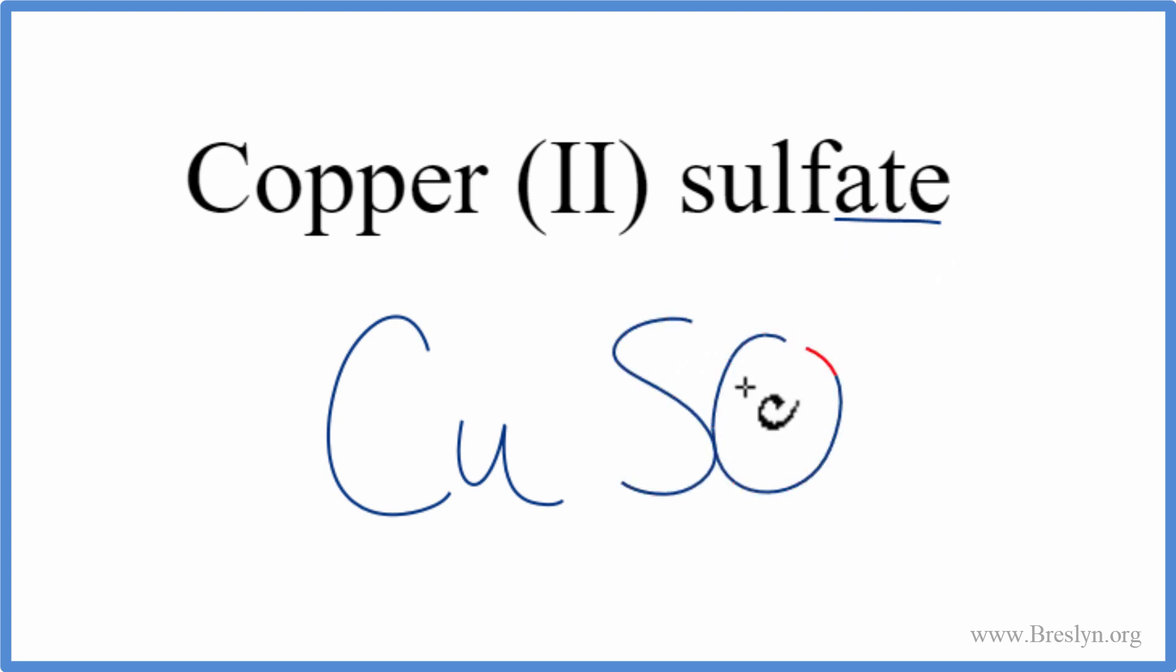Sulfate is SO4 2-. So copper is a metal, and then sulfate, that's a group of nonmetals.